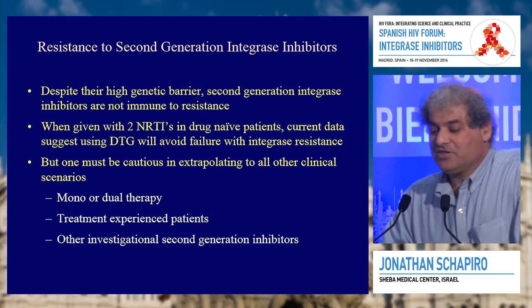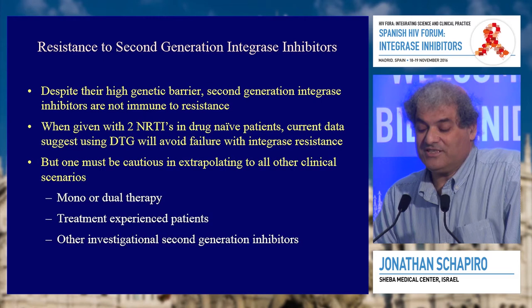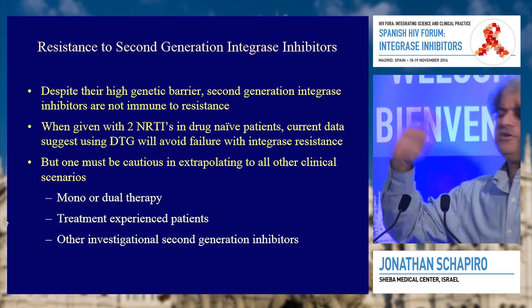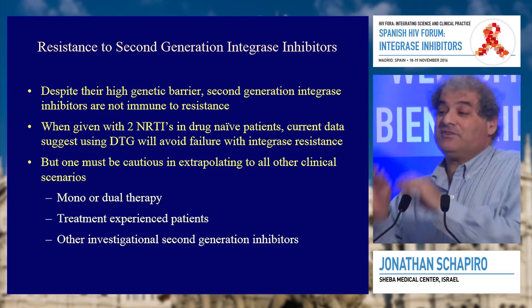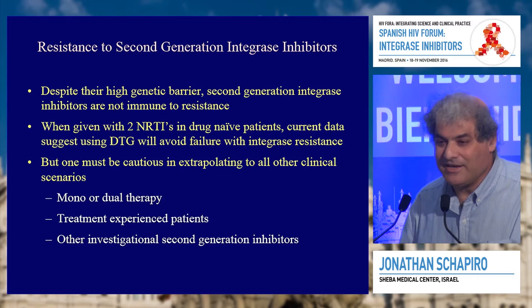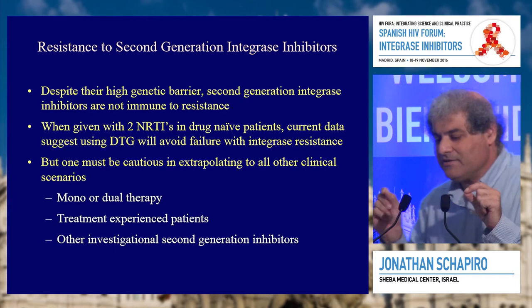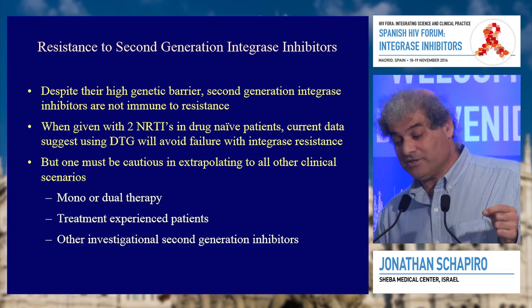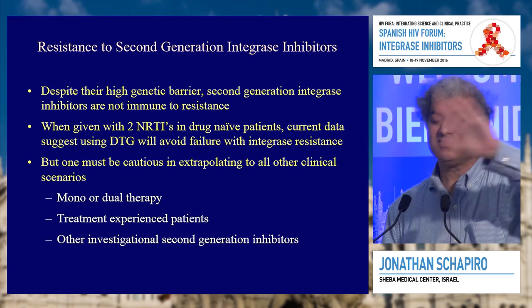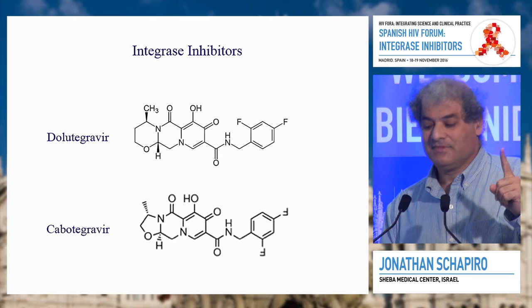Despite the high genetic barrier, second-generation integrase inhibitors are not immune to resistance. When dolutegravir is given with two NRTIs in drug-naive patients, current data suggests you will not see failure with resistance — we have lots of data from patients, clinical trials, and cohorts. But everything else has not yet been proven. We should be cautious about extrapolating this to monotherapy, dual therapy, treatment-experienced patients, or other investigational second-generation agents where we just assume it will be the same.